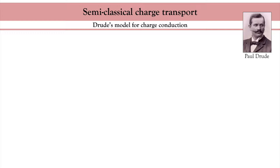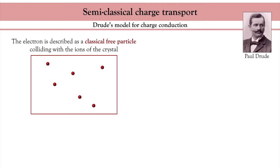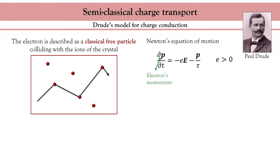This failure is an indication of the important role of the d orbitals. We are going to start with the simplest but still very powerful transport model introduced by Paul Drude in 1900. Drude considers charged particles driven by an electric field and colliding against the ions of the crystal. The transport equation is simply given by Newton's equation, with the electron momentum, the electric field, and a term accounting for momentum relaxation.